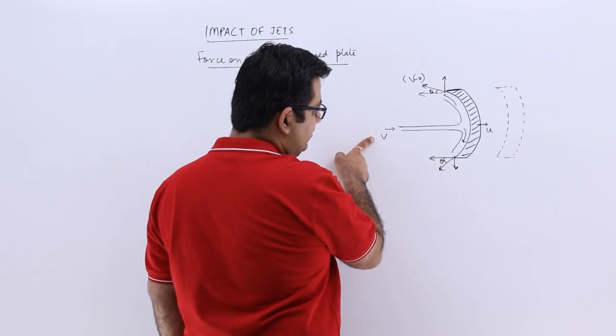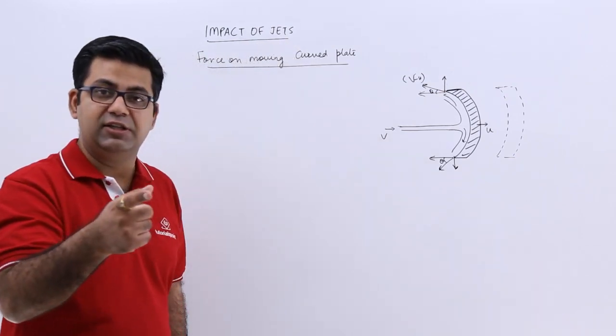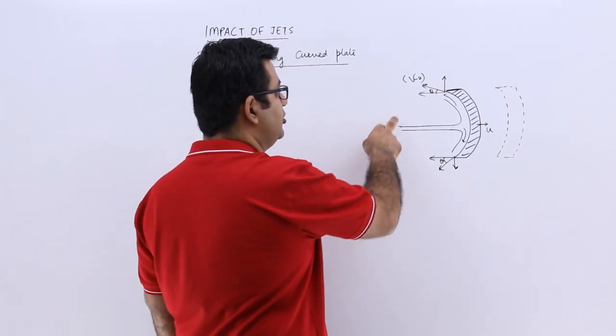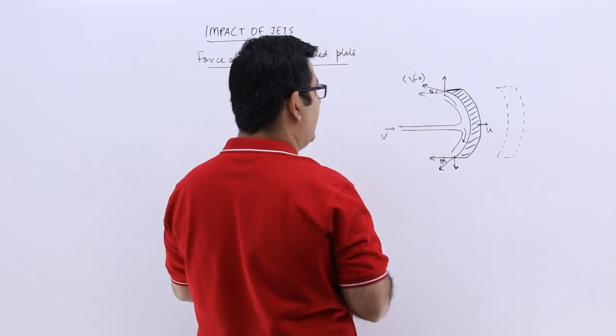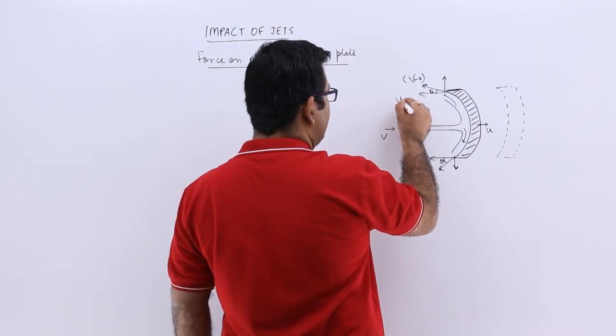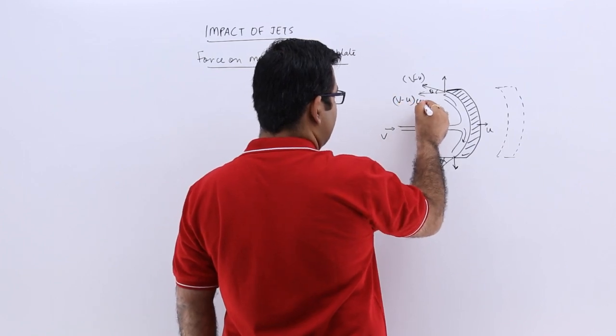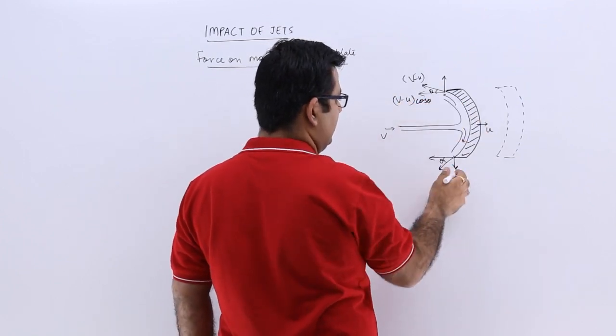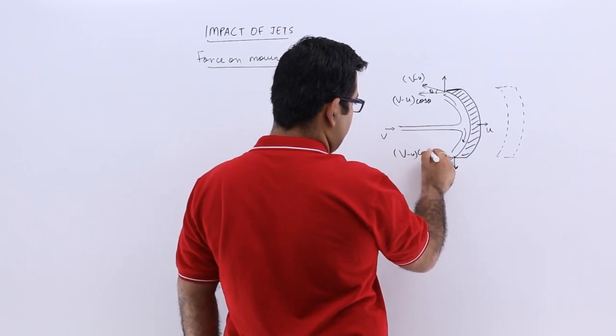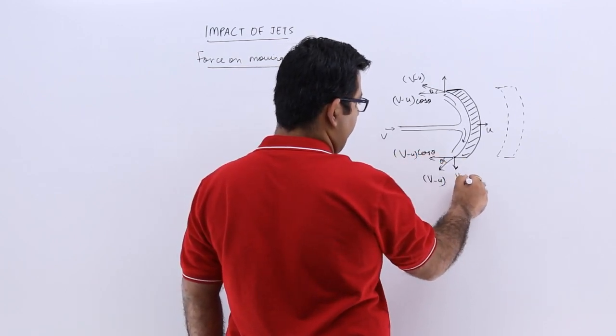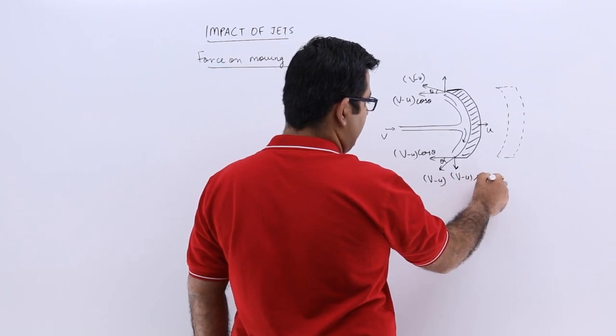So this is the velocity of jet but the velocity of the jet striking the plate is v minus u. So it comes out at an angle theta and is tangential to the curve. So this is v minus u and this is also cos theta and this will be sin theta.